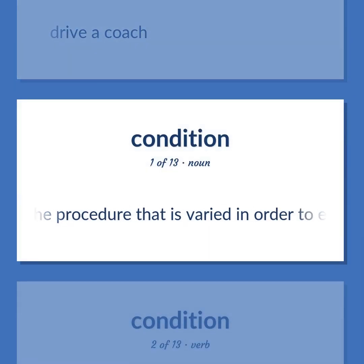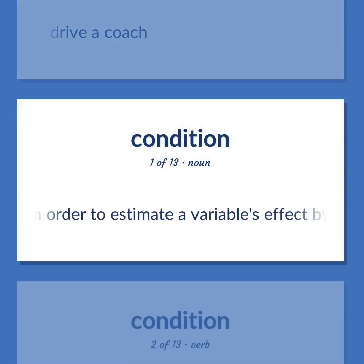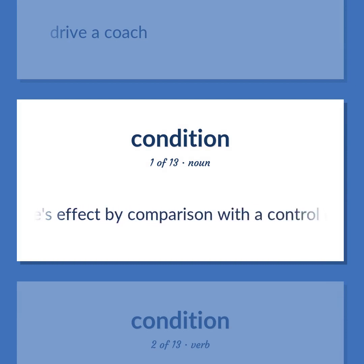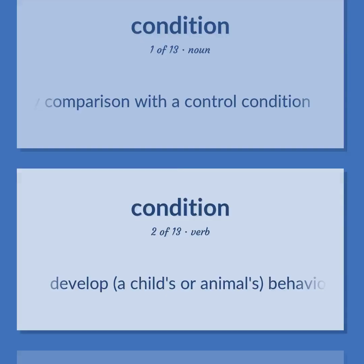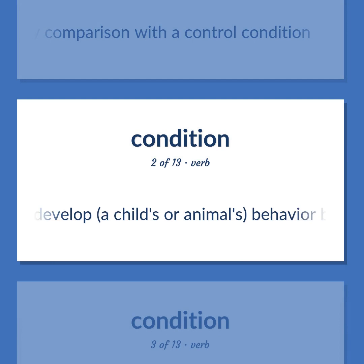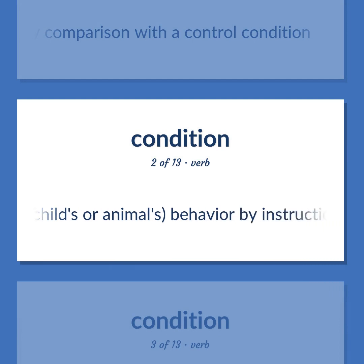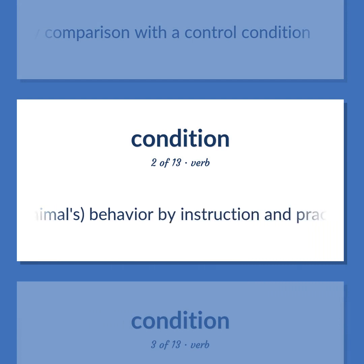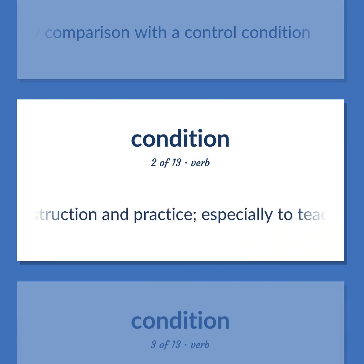Condition: The procedure that is varied in order to estimate a variable's effect by comparison with a control condition. Develop a child's or animal's behavior by instruction and practice, especially to teach self-control.